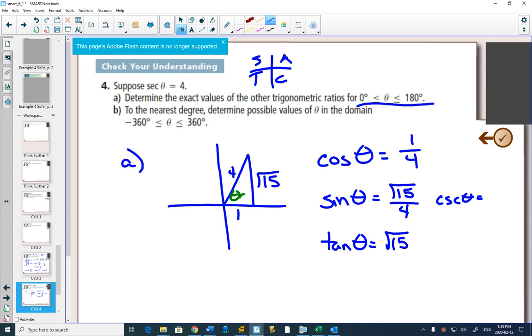Beside sine of theta, cosecant of theta would just be the reciprocal. And beside tan of theta, I'll do cotangent, would just be the reciprocal as well.